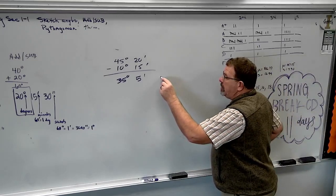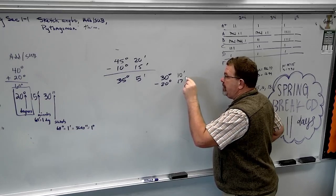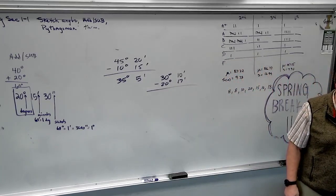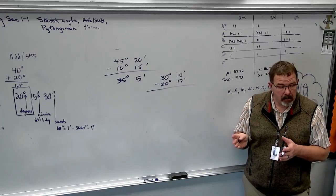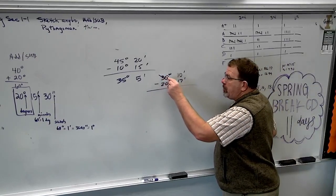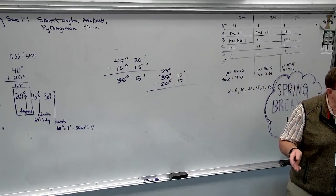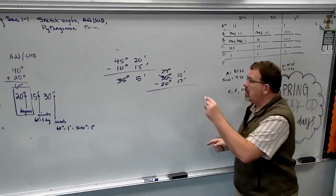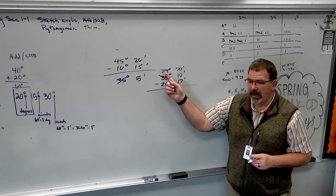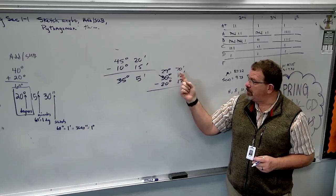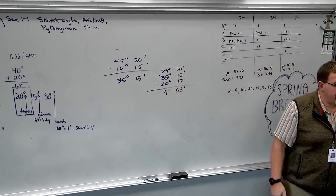There's a time you have to borrow. For example: 30 degrees, 10 minutes, minus 20 degrees, 17 minutes. We can't take 10 minus 17 — we don't want negative answers. So we have to borrow. Take one degree away from 30 — this becomes 29. That one degree gives you 60 minutes floating around. 60 plus 10 is 70. Now you can subtract: 70 minus 17 is 53, and 29 minus 20 is 9. Answer: 9 degrees, 53 minutes.